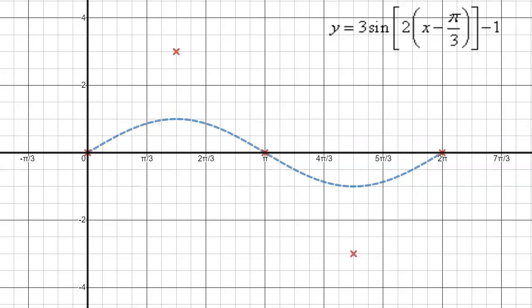And essentially what would happen is we would have three invariant points and two points that would actually be affected. So this point right here used to be at one and now I've multiplied it by three so the point moves up here. This point used to be at negative one, multiply that by three goes to negative three. And these points are effectively at zero, y equals zero, so multiplying them by three doesn't actually change anything.